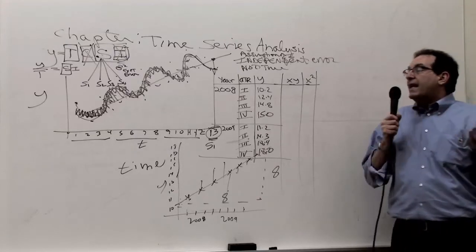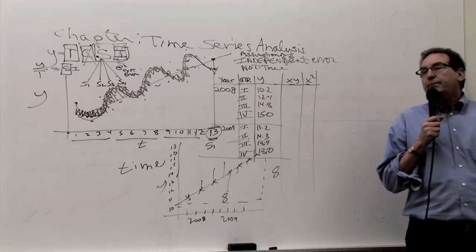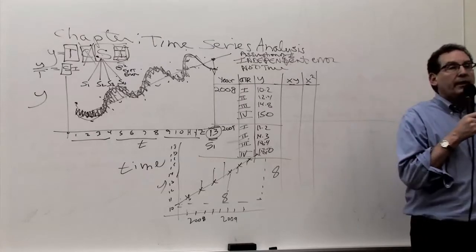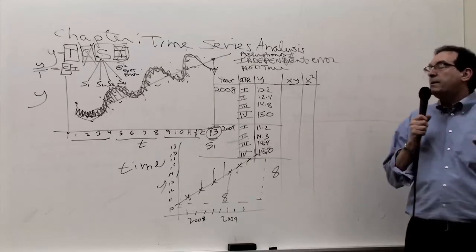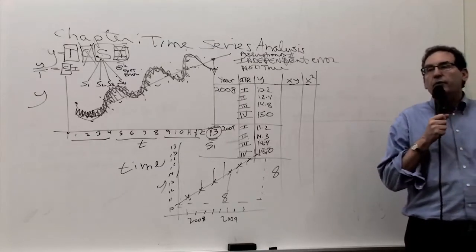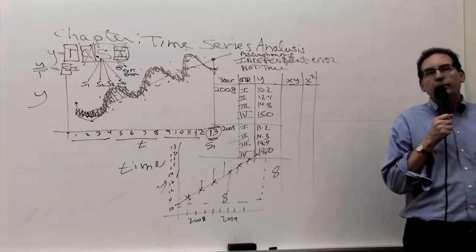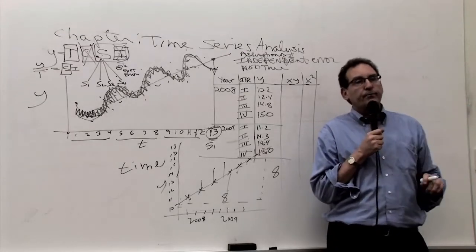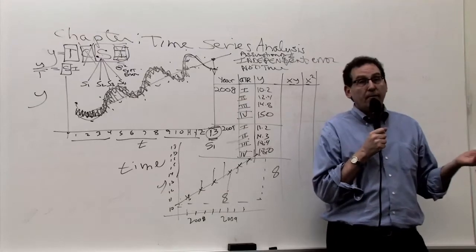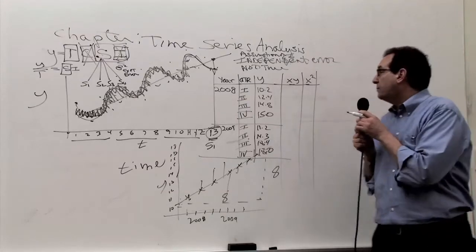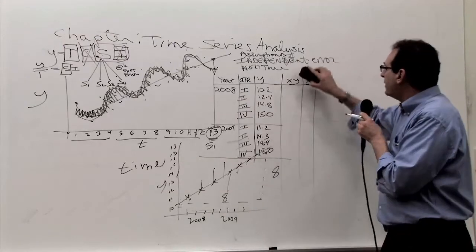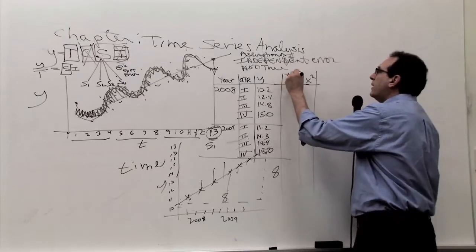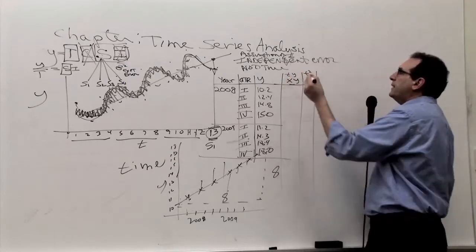The problem is: what is the x? That turns out to be a problem — a lot of people mess this up, even though I'm telling you explicitly what it is. The answer is x is time. So let's substitute t instead of x. Instead of calling the columns xy, we'll call them ty and t-squared. But it's the same as the x formula.